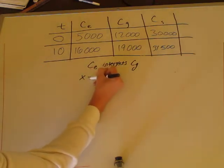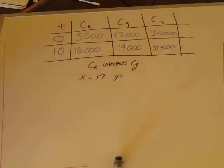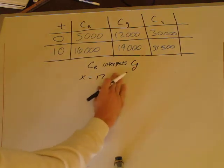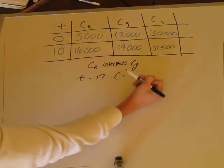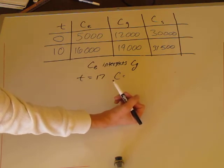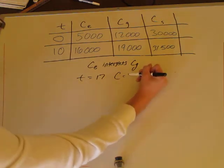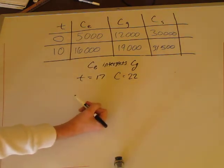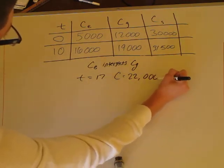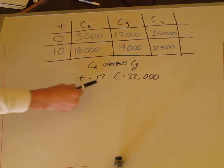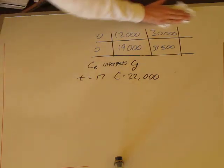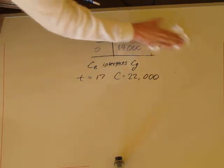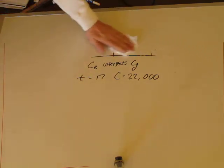So our estimate is t equals 17 years, and the cost — our y value — looks like about 22, which in thousands is $22,000. So our estimate for the solution to the system, where Ce equals Cg, is (17, $22,000). This means after about 17 years, the total cost of the electric system and the total cost of the gas system are approximately the same at $22,000. Pause the video and finish your charts before we move on.